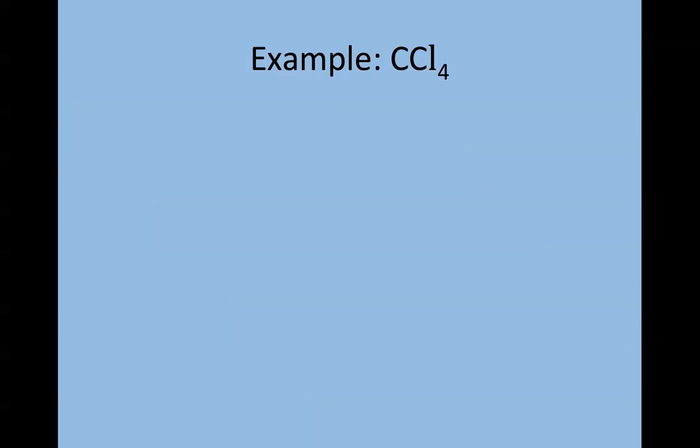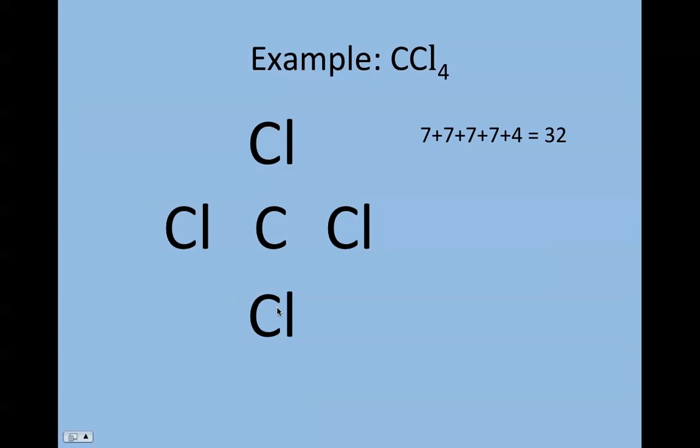Let's look at carbon tetrachloride, CCl4. We have one carbon and four chlorines. First, add up all the electrons. The four chlorines contribute seven valence electrons each, and the one carbon contributes four electrons, giving a total of 32 electrons. Carbon is present, so that's the central atom, and the chlorines are terminal atoms. Draw a single bond between the central and terminal atoms, not connecting the terminal atoms at all.